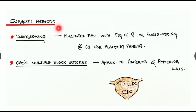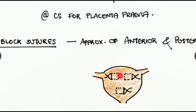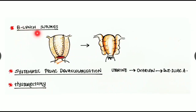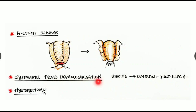If all these fail, surgical methods are used. Options include undersewing where the placental bed is sutured with figure-of-eight or purse-string sutures, done at cesarean section for placenta previa. B-Lynch sutures compress the uterus by suturing the anterior and posterior walls together, reducing the uterine cavity and decreasing bleeding. Systematic pelvic devascularization involves ligation of uterine arteries first, then ovarian arteries, then internal iliac arteries if bleeding continues. The final option is hysterectomy to save the mother's life.